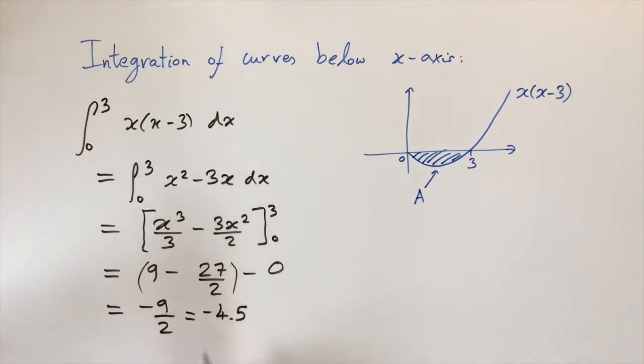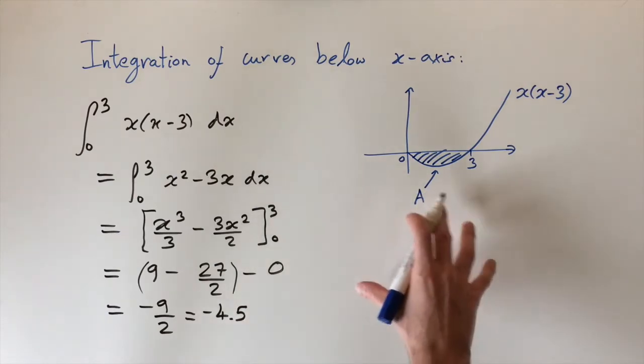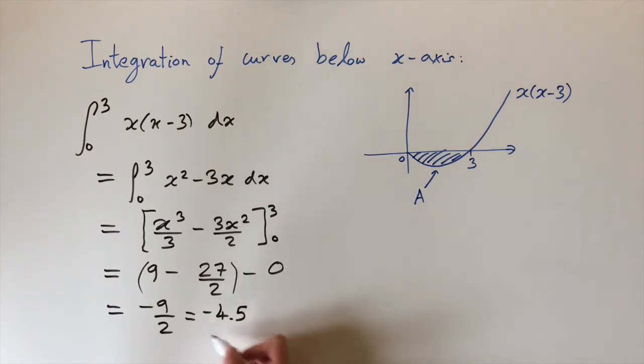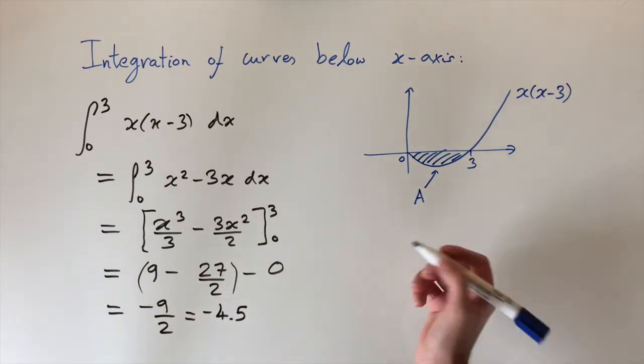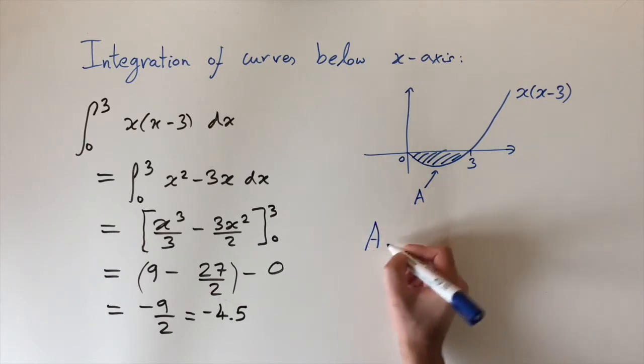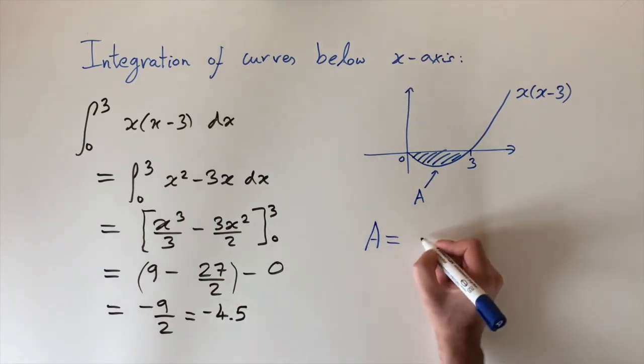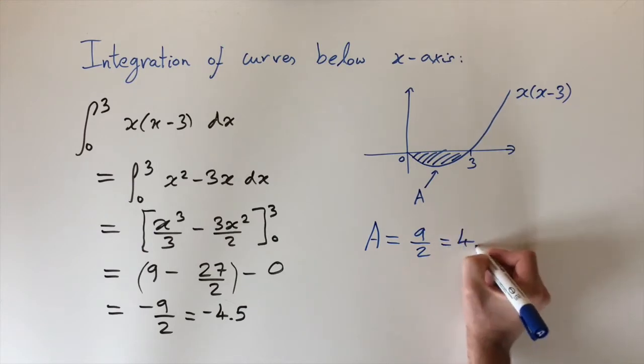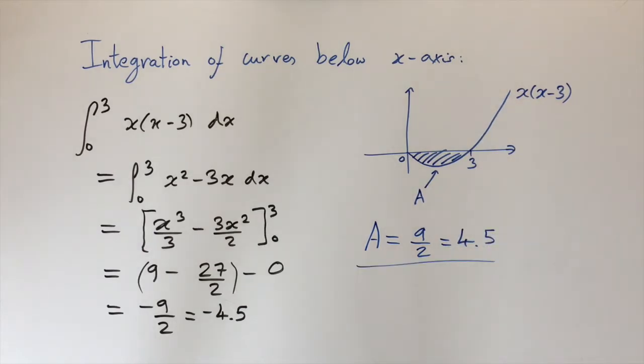So we see we do get a negative number here. And so to find the area that we're after, we just need to take the negative value of this to take it positive. So we deduce the area A is equal to 9 divided by 2, or 4.5. So that's just something to be aware about.